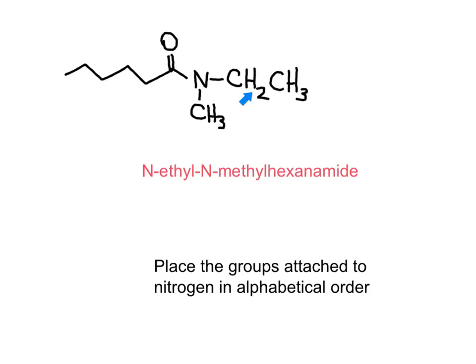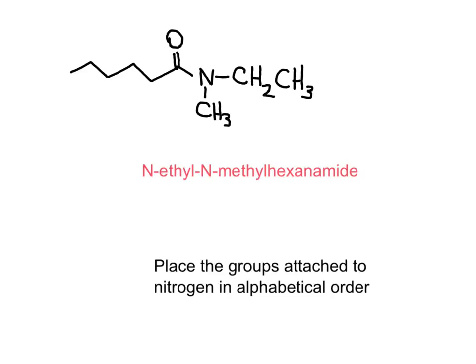This example is also a tertiary amide, reminding us that when we have different substituents, they must be placed in alphabetical order. We have a hexanamide with an ethyl and a methyl group on the nitrogen, and the full name in alphabetical order is N-ethyl-N-methylhexanamide.